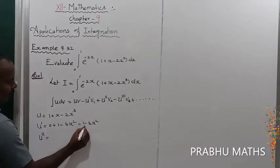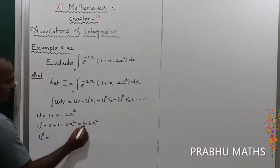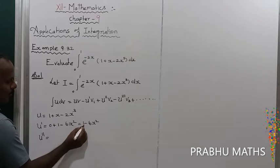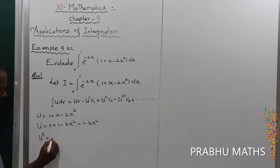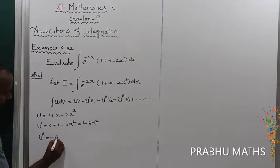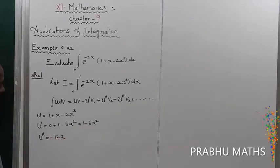The second derivative u'' — taking the derivative again: the constant term goes to 0, and the remaining term gives u'' = -12x.